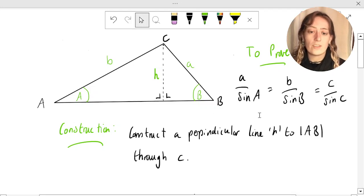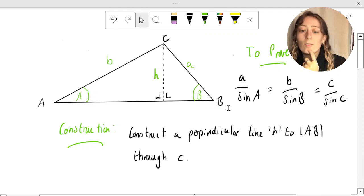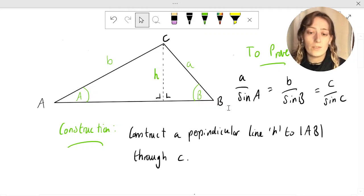Now that we have this constructed, this dotted line through, you can see that our triangle has actually been split into two triangles. We have this one here, and we have the other one. You might know that these are two right angle triangles, and we're going to use that fact to finish this proof.